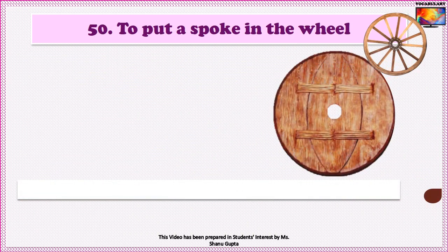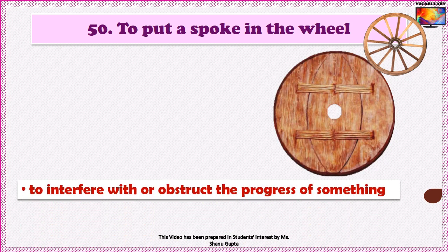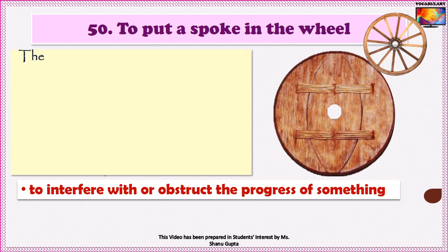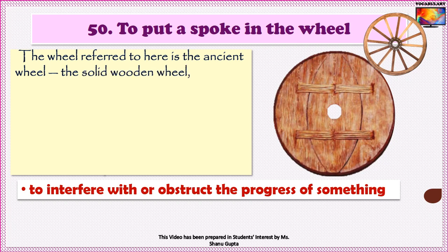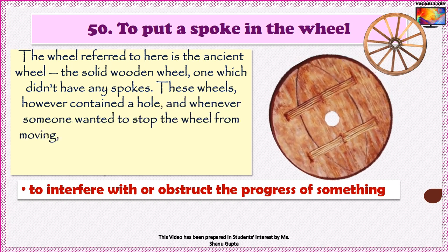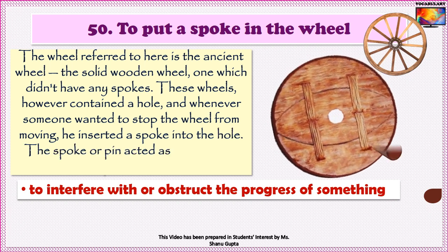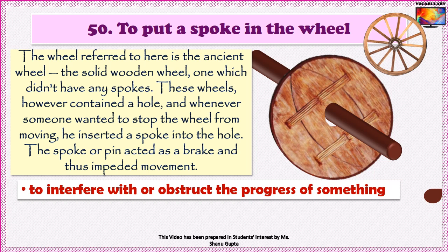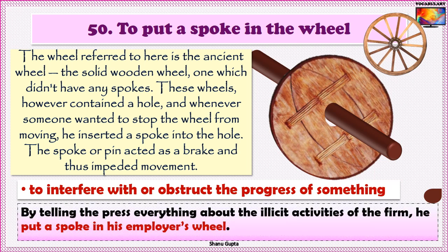And our 50th idiom is To put a spoke in the wheel. This idiom means to interfere with or obstruct the progress of something. The wheel referred to here is the ancient solid wooden wheel which did not have any spokes — it contained a hole, and whenever someone wanted to stop the wheel from moving, he inserted a spoke into the hole. The spoke acted as a brake and thus impeded movement. An example: By telling the press everything about the illicit activities of the firm, he put a spoke in the wheel of his employer.